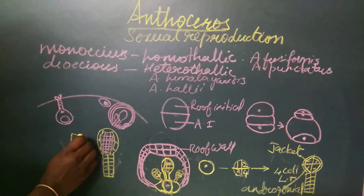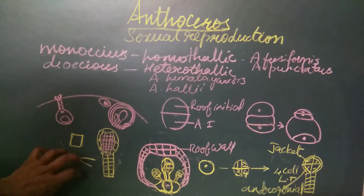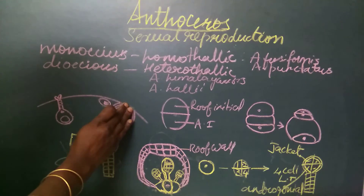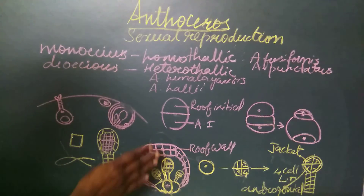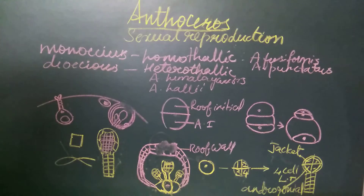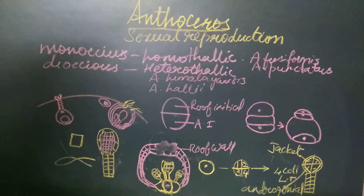Each androcyte is a cuboidal cell that metamorphoses into a biflagellate antherozoid. At maturity, when the antherozoids are ready for release, the epidermis ruptures. The anthridial chamber walls disintegrate, and the jacket of the antheridium also disintegrates. As water enters the chamber, the jacket disintegrates and all the antherozoids are released into the external environment, where they swim in water and reach the egg for fertilization.